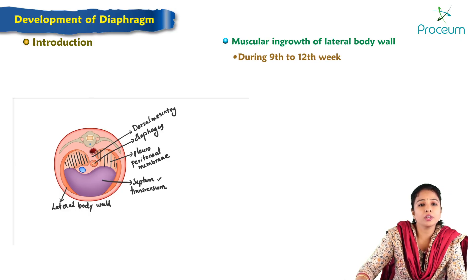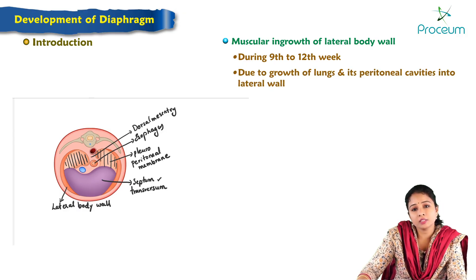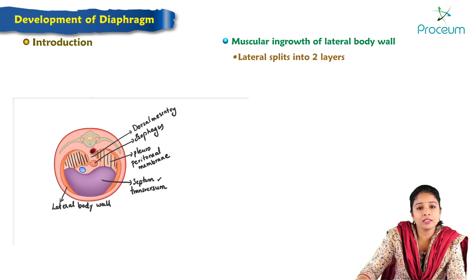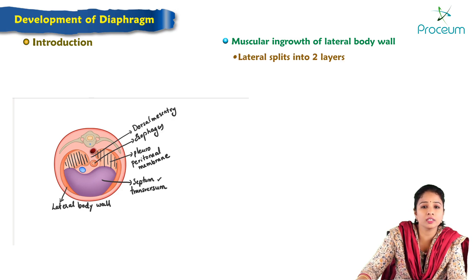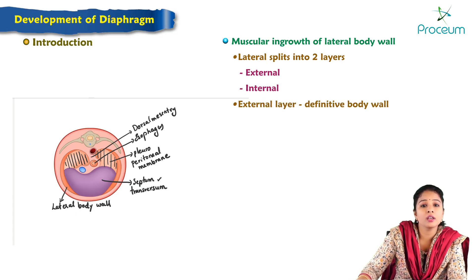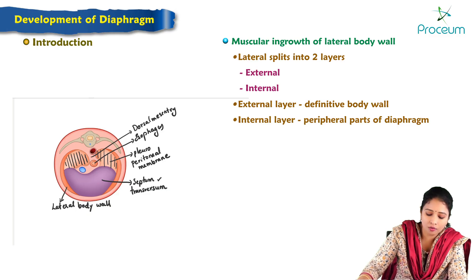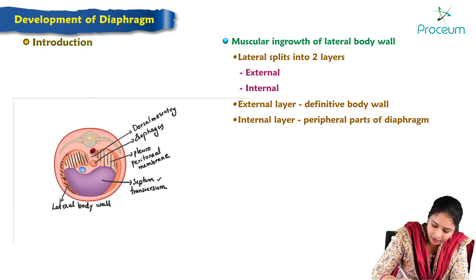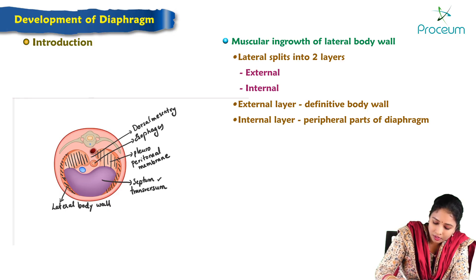Lastly, regarding muscular ingrowth from the lateral body wall: during the 9th to 12th week of development, due to the growth of lung buds and pleural cavities into the lateral wall, the developing pleural cavity — the pleuroperitoneal canals — burrows into the lateral body wall. This splits the lateral body wall into two layers: an external layer and an internal layer. The internal layer forms the peripheral part of the diaphragm.